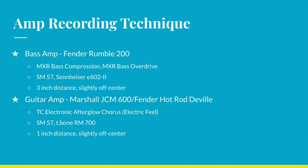While I was recording the DI guitar and bass tracks, I was also recording real amps in parallel. My bass setup was a Fender Rumble 200, an MXR bass compression pedal and bass overdrive pedal, recorded with an SM57 and a Sennheiser E602, which is a large diaphragm dynamic, each placed 3 inches from the grill, slightly off-center. My guitar setup was a Marshall JCM-600 for BombTrack and Electric Feel, and a Fender Hot Rod DeVille for Just Another Face. On Electric Feel I used a TC Electronic chorus pedal, and I recorded both amps with an SM57 and a T-Bone ribbon mic, placed 1 inch from the grill, slightly off-center.